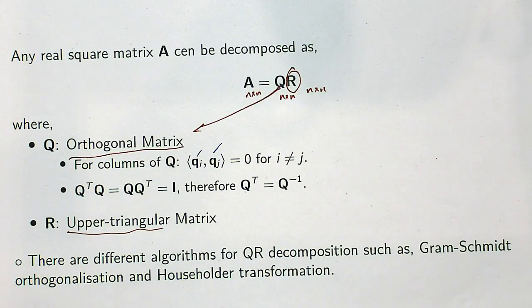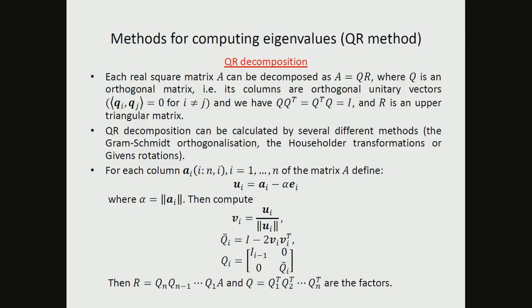We can use QR decomposition to find the eigenvalues of a matrix through iteration — this is not a one-step mathematical operation. This is exactly the spirit of numerical methods: we design an iterative algorithm, starting from an initial guess and repeating the process to converge to the answer. When we say 'calculate' we typically mean analytically; when we say 'compute,' we mean numerical analysis.